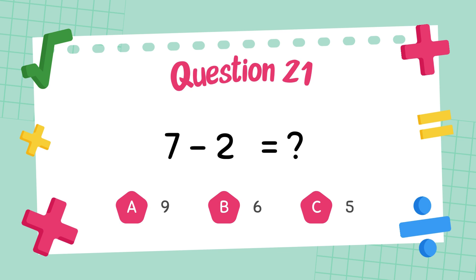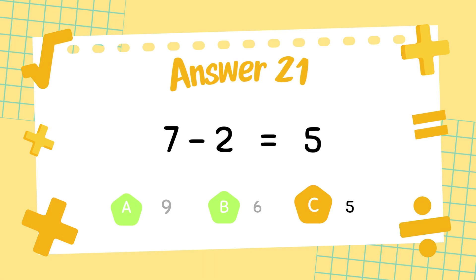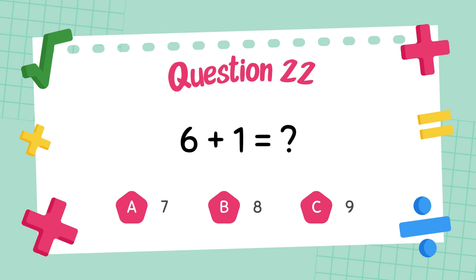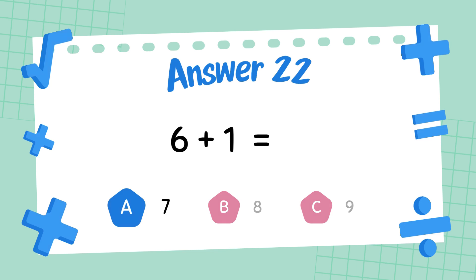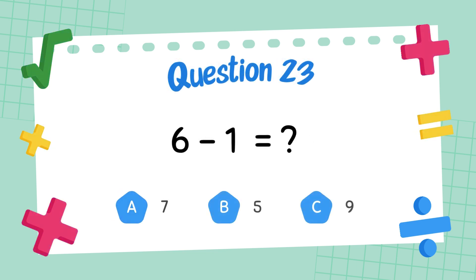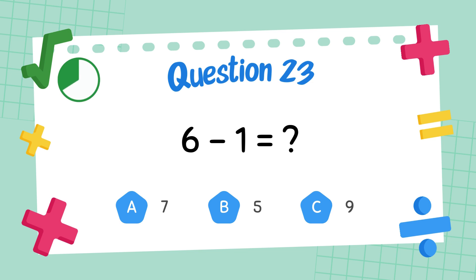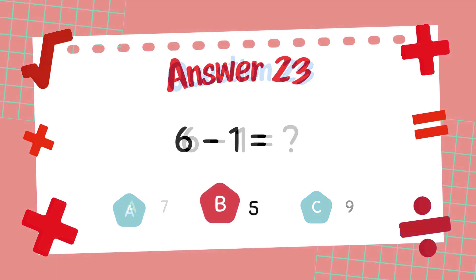What is 7 minus 2? The answer is 5. What is 6 plus 1? The answer is 7. What is 6 minus 1? The answer is 5.